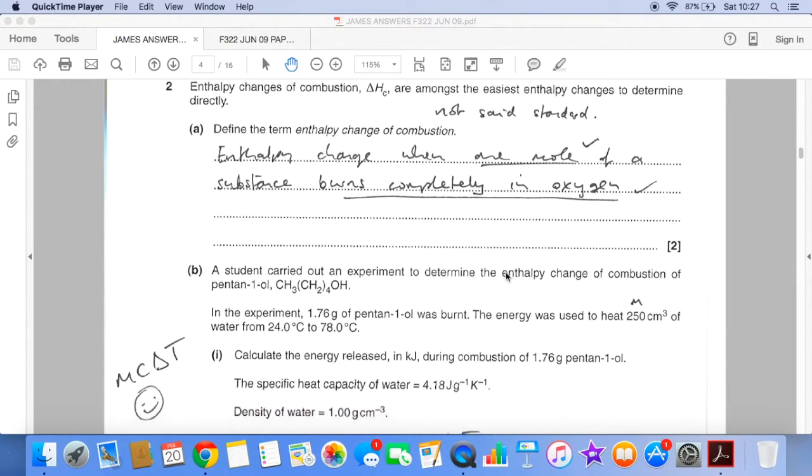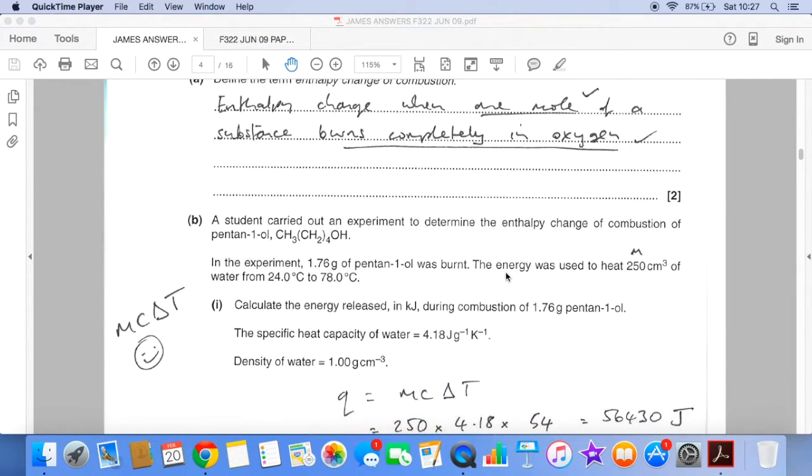The calculation, part B, you can see I've written there, it's an MC delta T question. So the clue's there, we've got a volume of water, so effectively that's the mass of water that's being heated. We've got a temperature change there, and we're given specific heat capacity which is C. So there are all the clues in the question that it's an MC delta T.